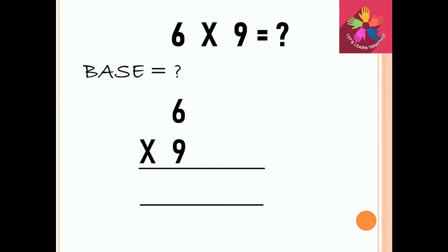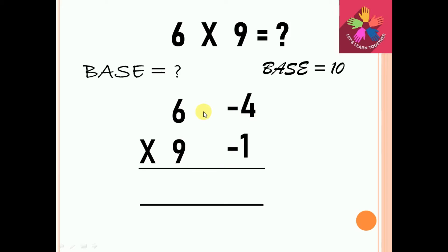Now we will apply this to our example. Looking at 6 and 9, which power of 10 are they closest to? 10 or 100? They are closest to 10, so we take the base as 10. Now we find the difference from the base: 6 minus 10 equals minus 4, and 9 minus 10 equals minus 1.